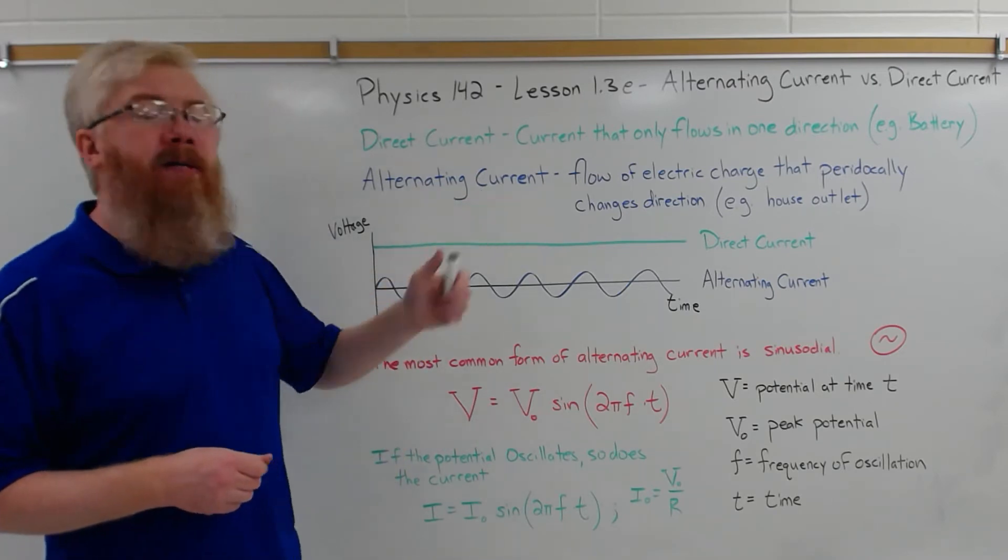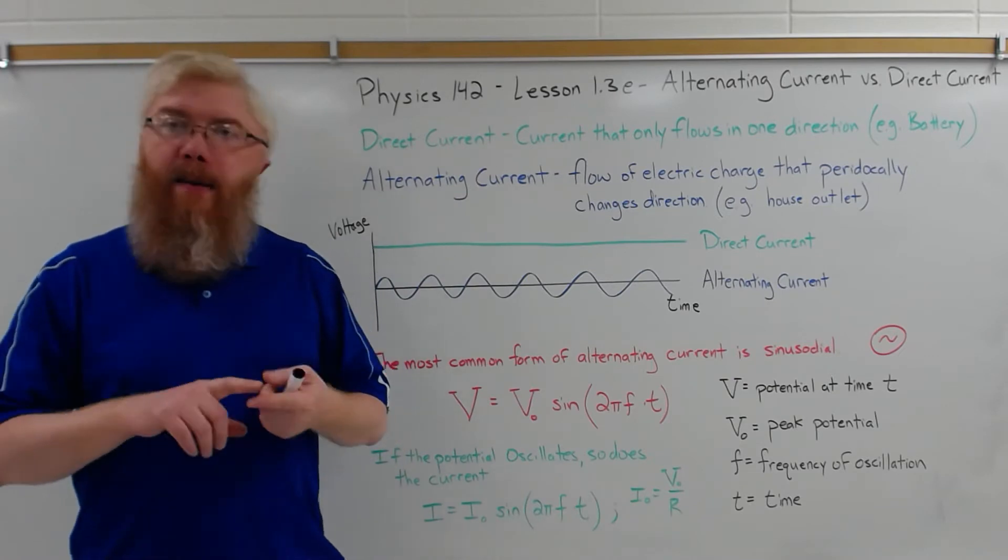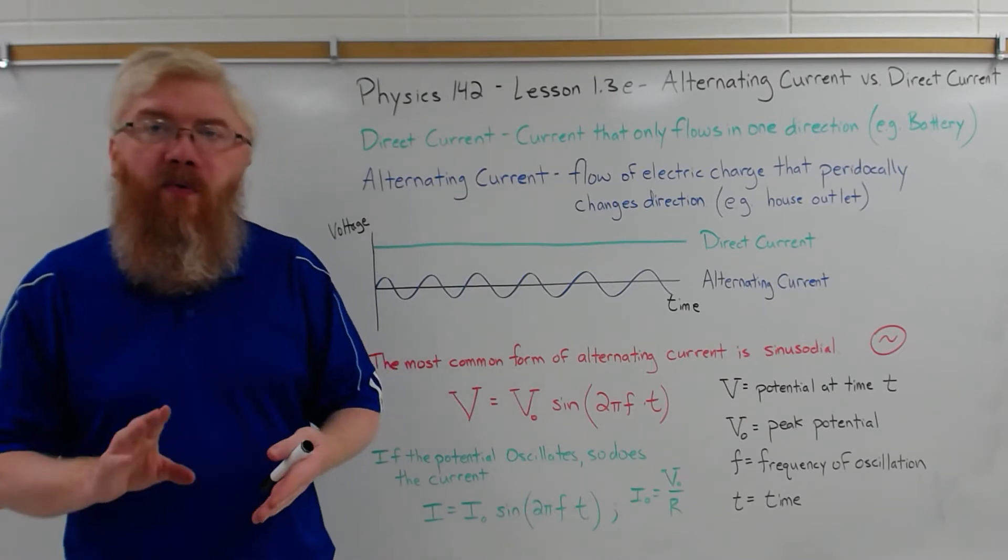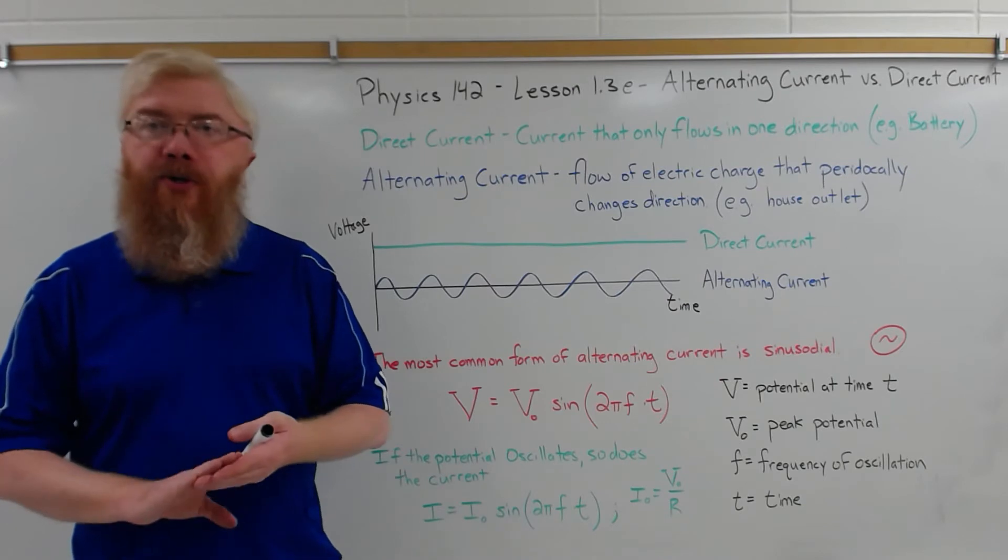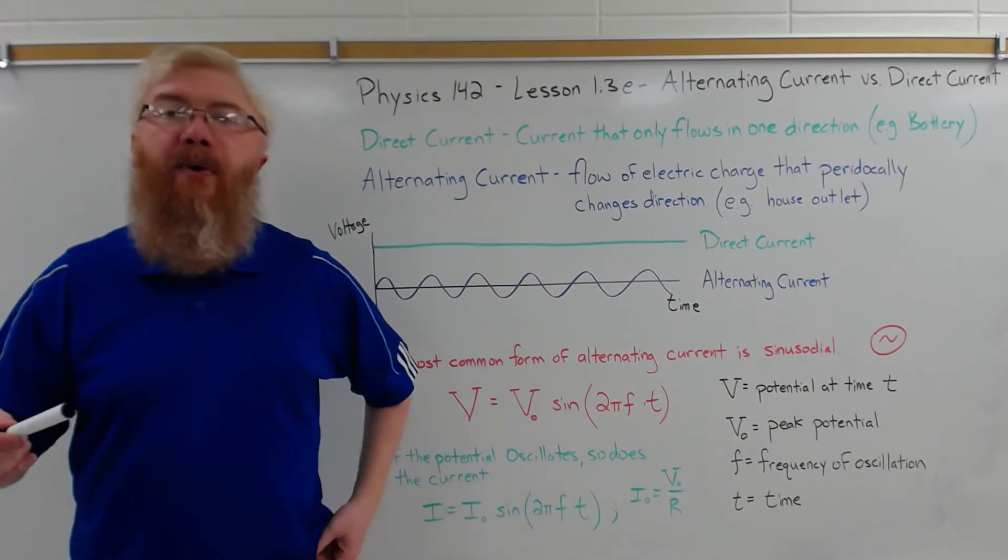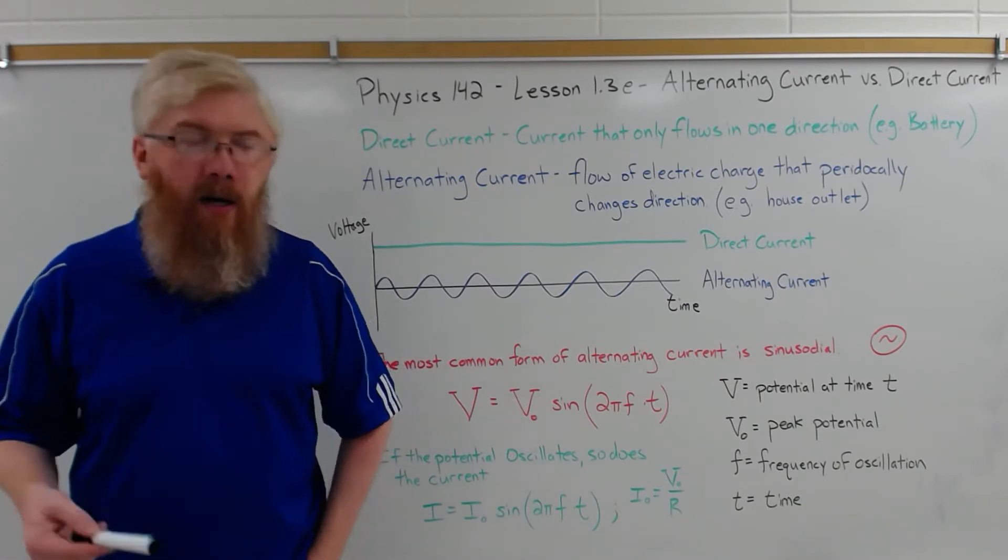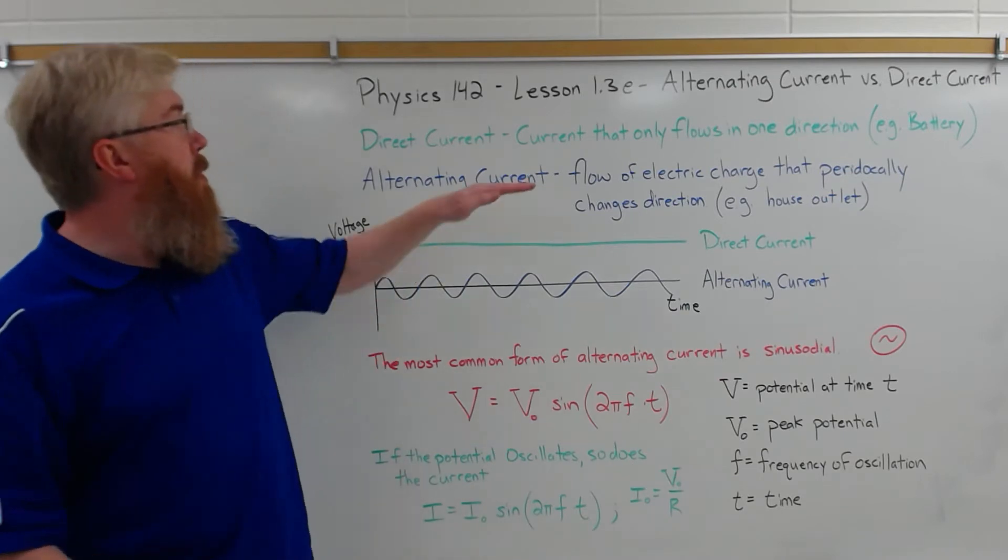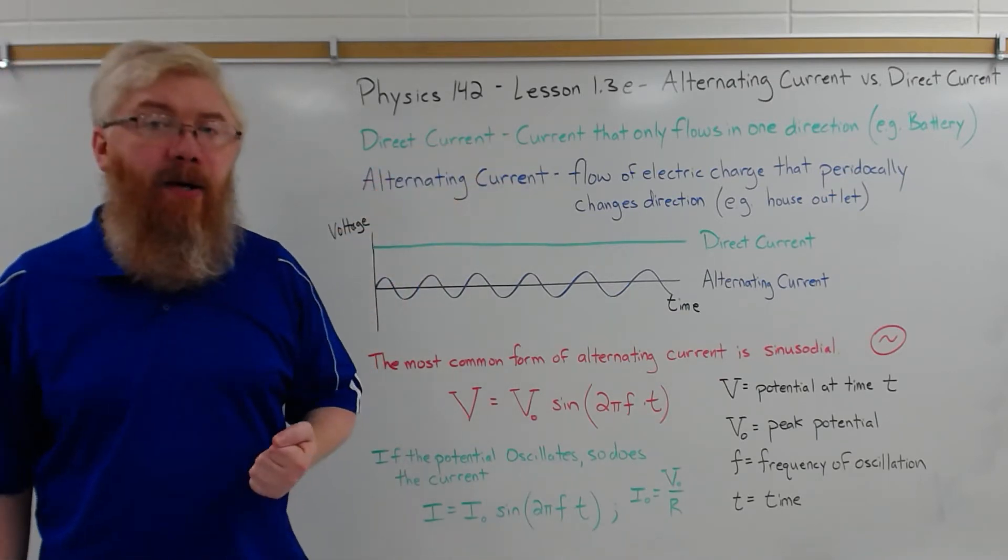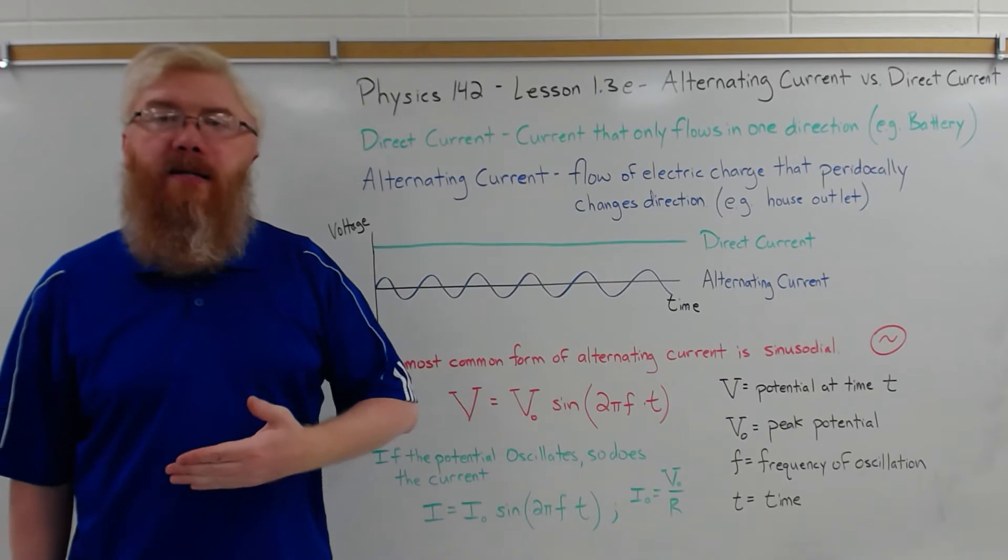Alternating current - your household, and a lot of lamps, your electric stove, dishwasher, refrigerator, those types of things operate using alternating current. So direct current is often referred to as DC current, alternating current is referred to as AC.